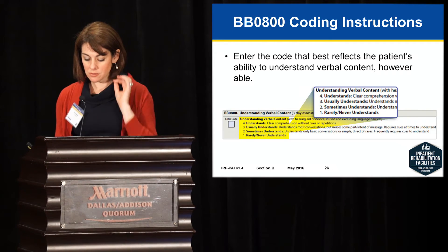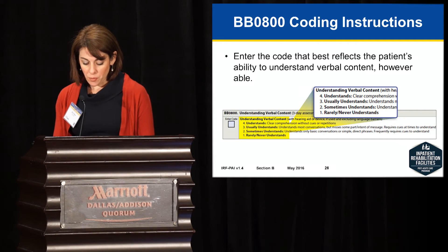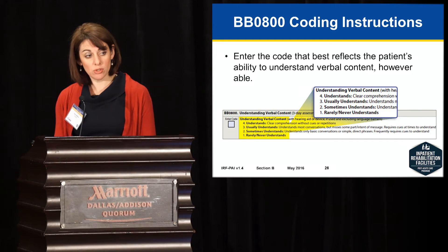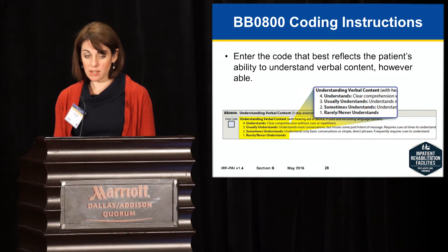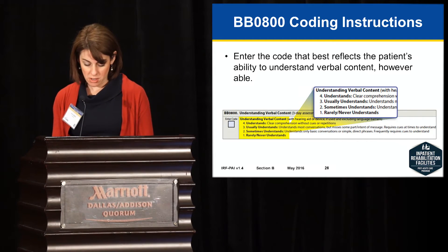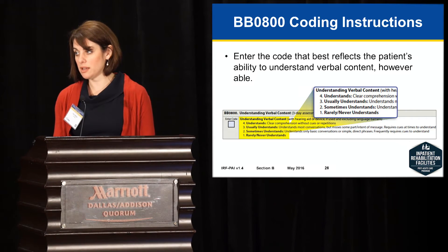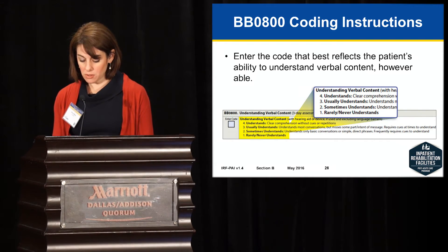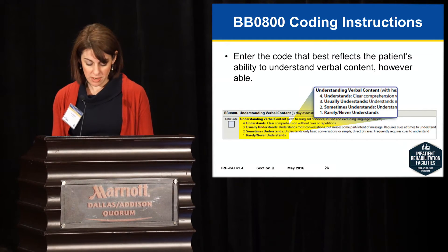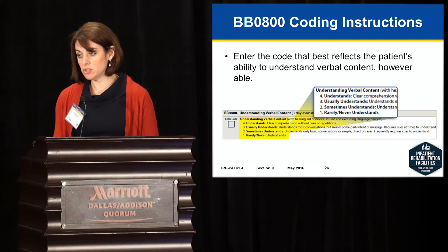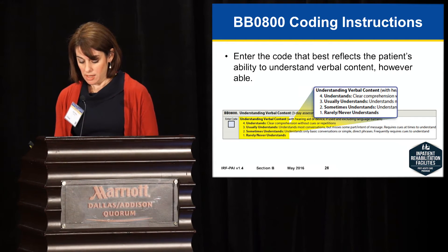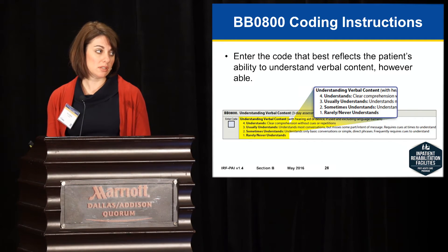The coding instructions for BB0800: code 4 — understands, with clear comprehension without cues or repetition. Code 3 — usually understands; the patient understands most conversations but misses some part or intent of the message, or requires cues at times. Code 2 — sometimes understands; the patient understands only basic conversations or simple direct phrases, or frequently requires cues. Code 1 — rarely or never understands.